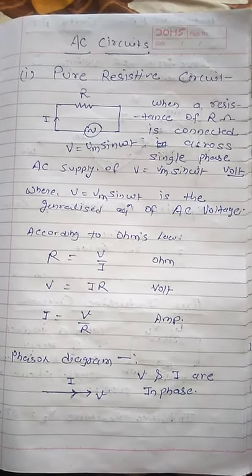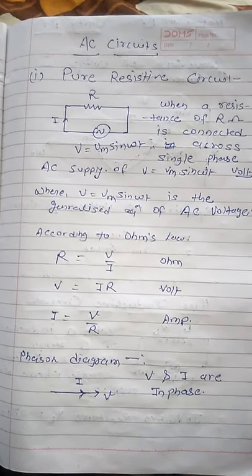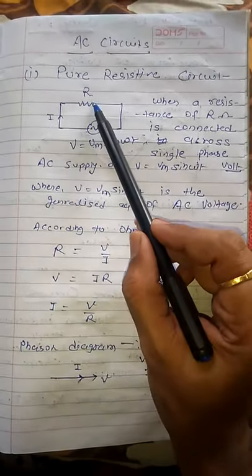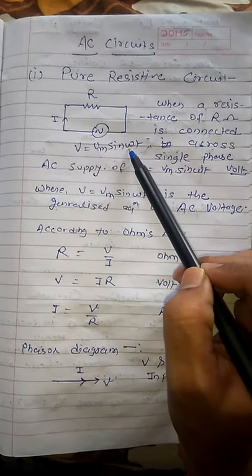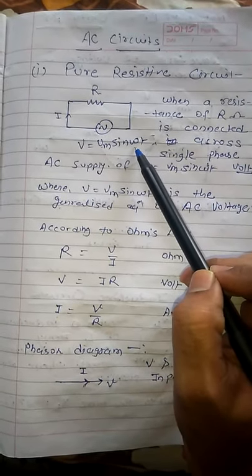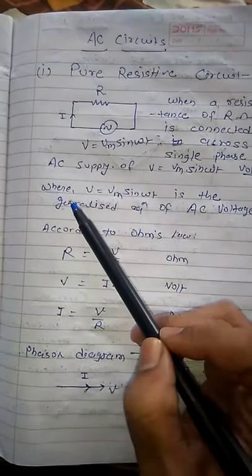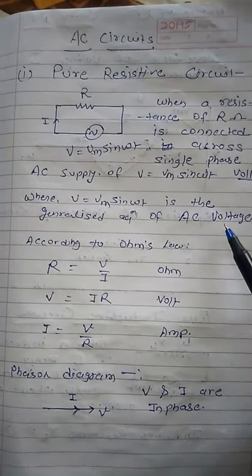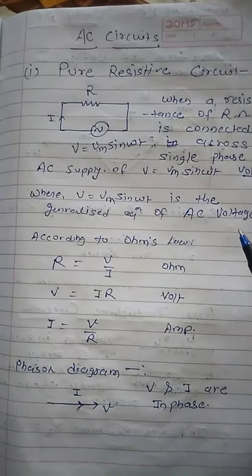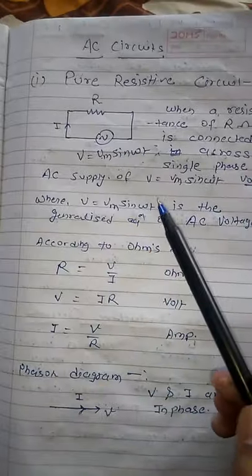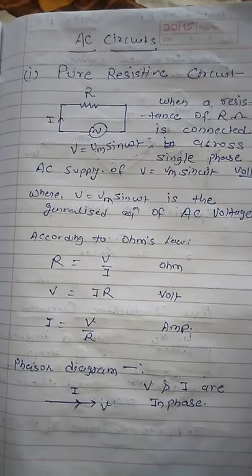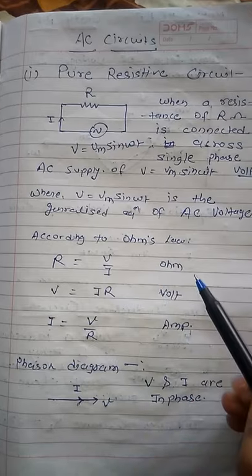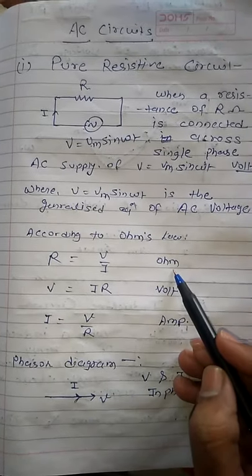So it is a basic concept and you have to understand it. First is the pure resistive circuit — when a resistance of R ohms is connected across a single phase AC supply, where V is equal to Vm sin(ωt) is the generalized equation of AC voltage. According to Ohm's law, R is equal to V by I.